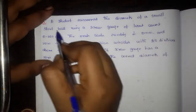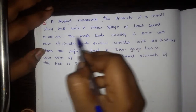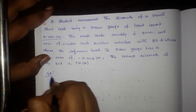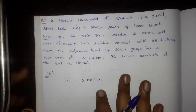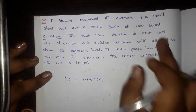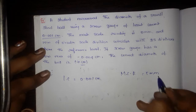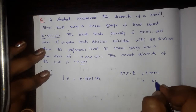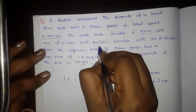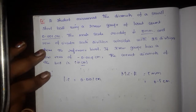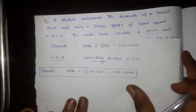A student has measured the diameter of a small steel ball using a Screw Gauge of least count 0.01 cm. The main scale reading is 5 mm, which equals 0.5 cm. The 0 of the circular scale coincides with 25 divisions. The Circular Scale Reading = coinciding division × LC.